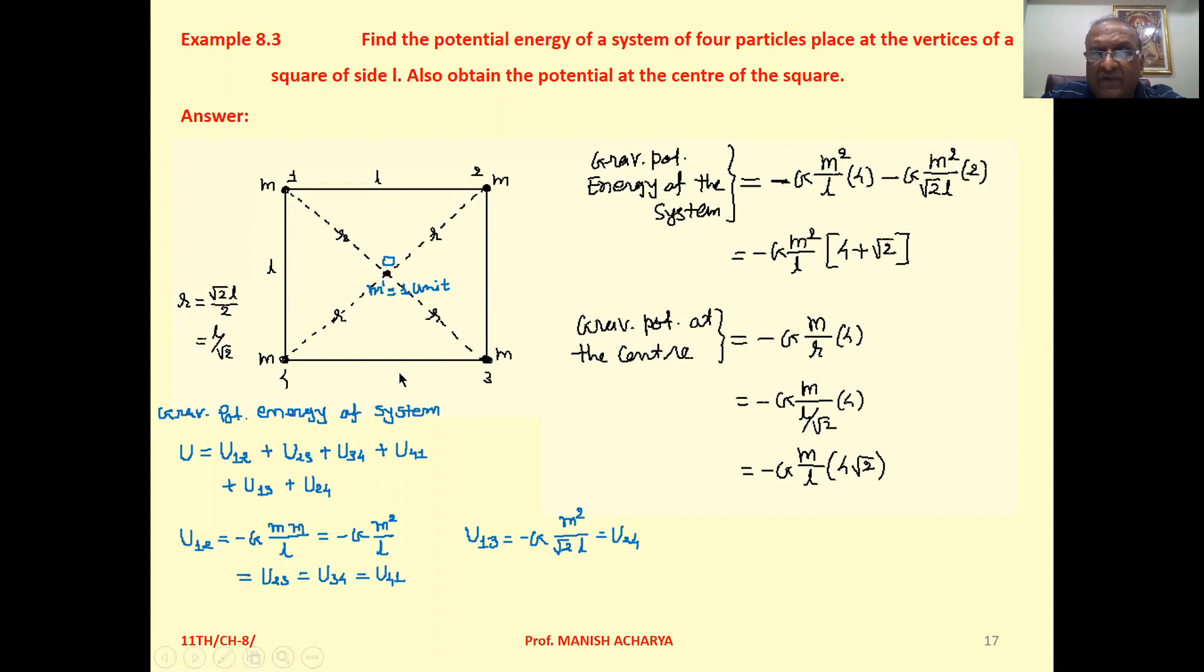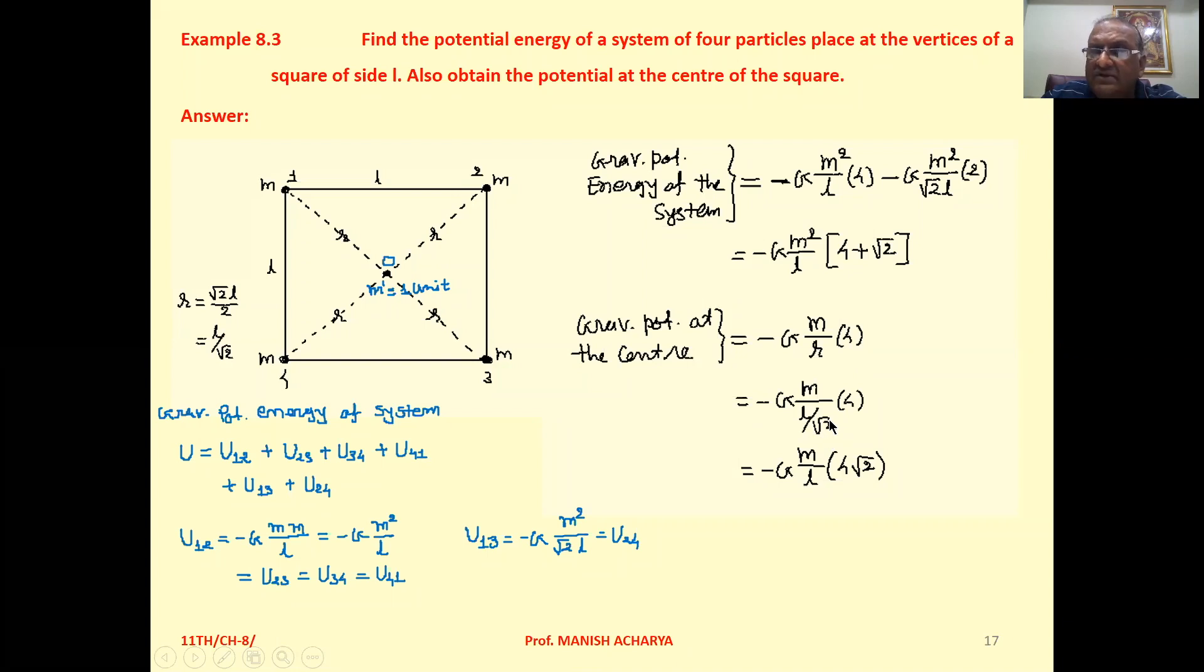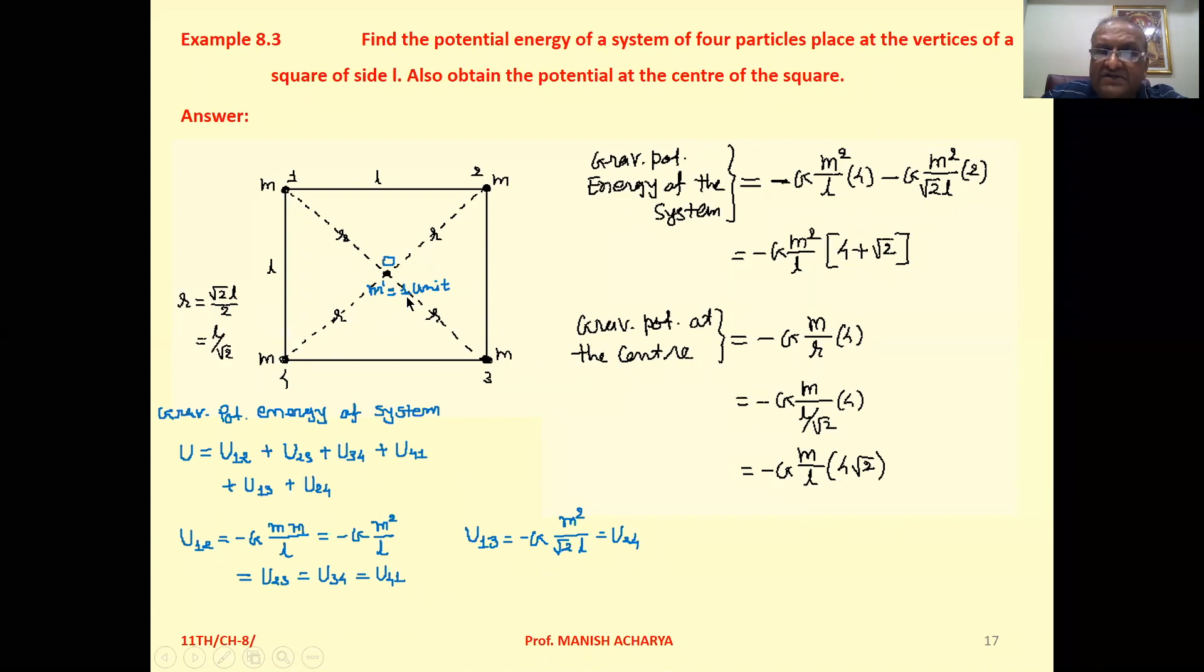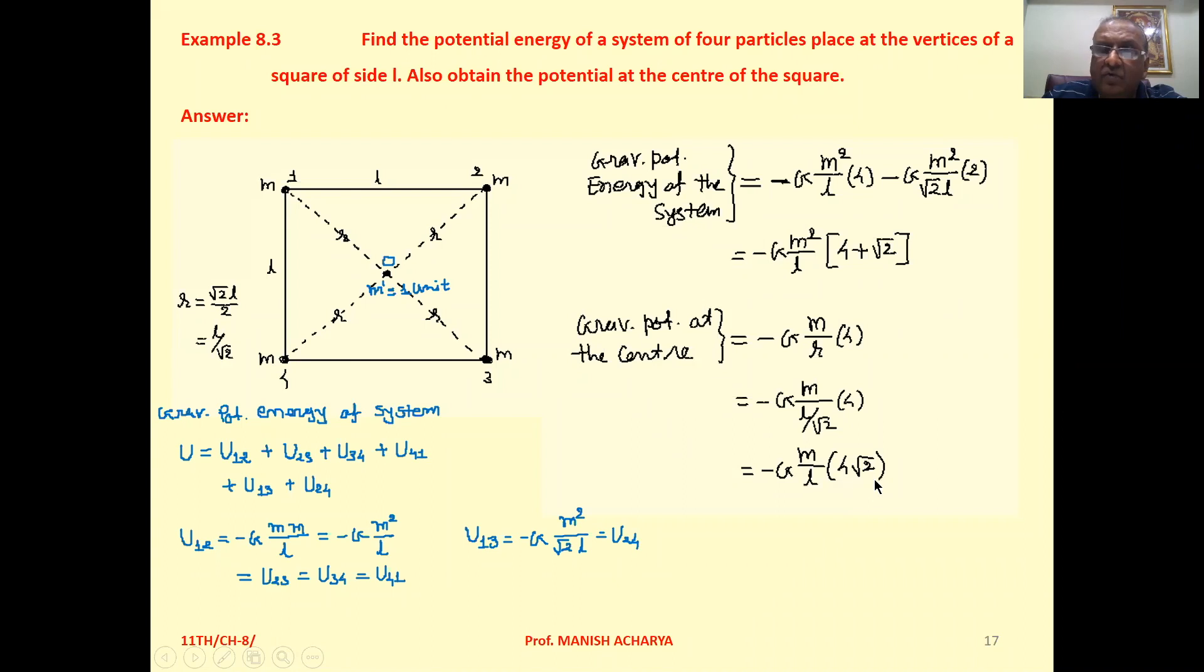But there are four such particles, so for the resultant potential multiply by 4. So the gravitational potential at the center is minus G m upon r into 4. Now replace r by L by root 2. This root 2 will be in the numerator. So resultantly the gravitational potential at the center is minus G m upon L into 4 root 2.